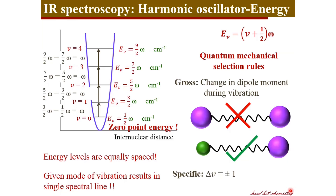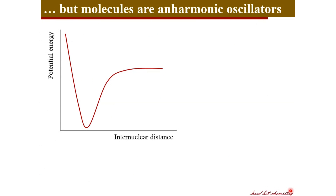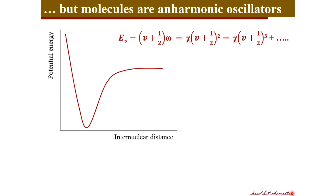That's how the molecule should work if it were a harmonic oscillator. But real molecules are not harmonic oscillators — at least in the upper part of the potential energy well, we see deviations from parabolic, harmonic behavior. The energy corresponding to the anharmonic oscillator is found to include new terms in comparison to the harmonic oscillator, involving χ, the anharmonicity constant.